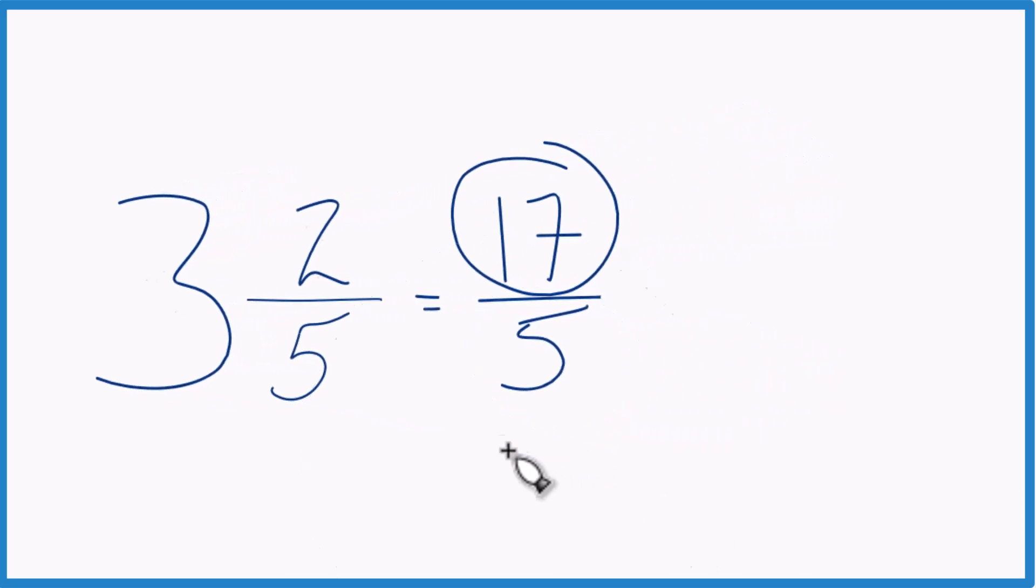We can check our work, too, because 5 goes into 17 three times with 2 left over. Bring the 5 across. 3 and 2 fifths.